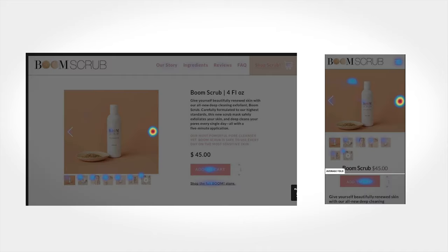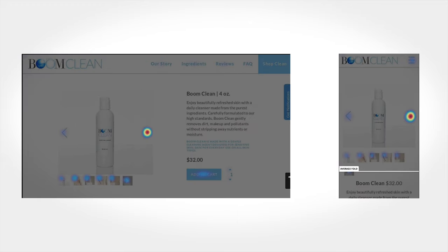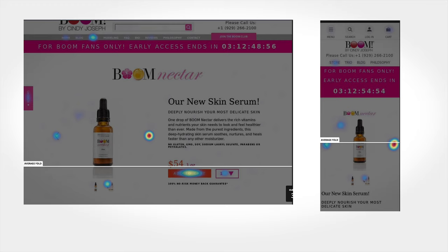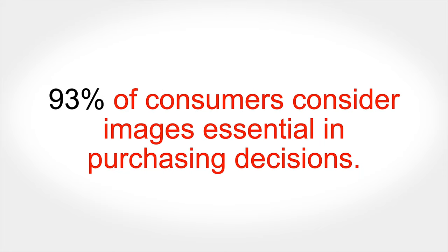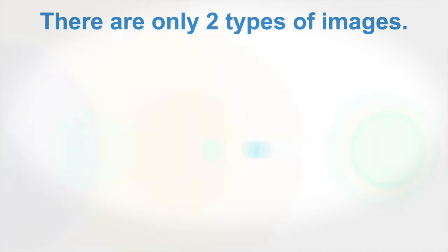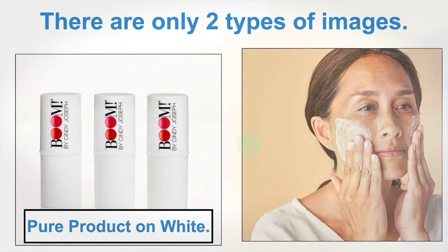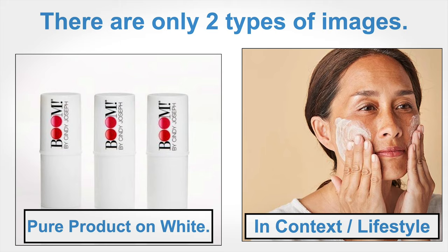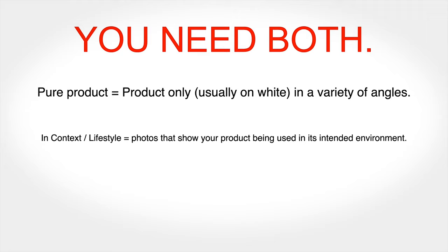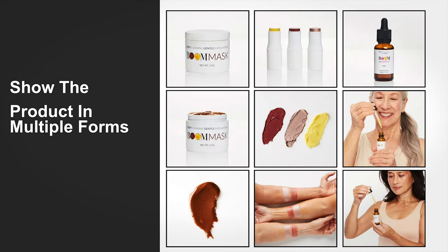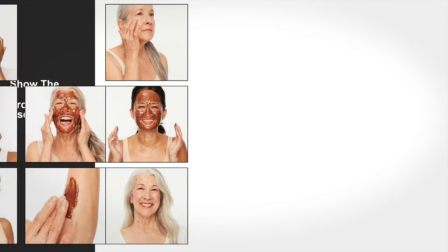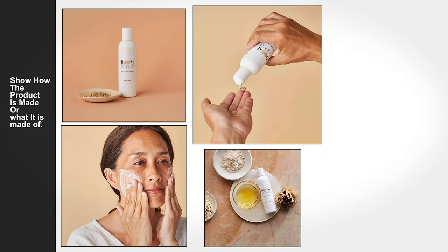Once you've picked your testimonial, choose your carousel pictures—at least six, ideally eight to ten. Look at heat maps on a mobile or desktop product page and all the activity is in the carousel. That's because 90% of information transmitted to your brain is visual, and 93% of consumers consider images essential in making product decisions. Your images represent your product's perceived value and quality. There are only two types of images: pure product on a color background, and your product in context in its intended environment—lifestyle. You need both in a variety of angles.